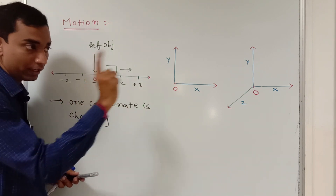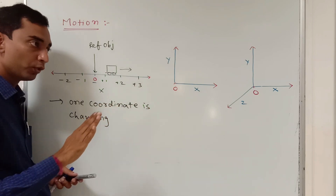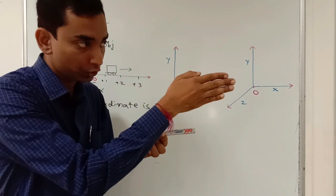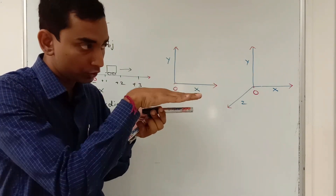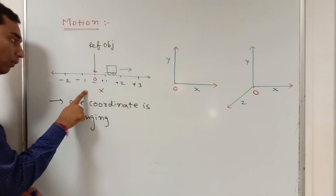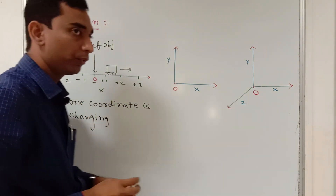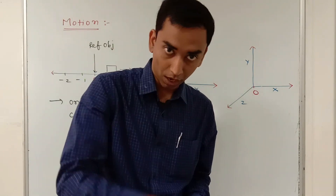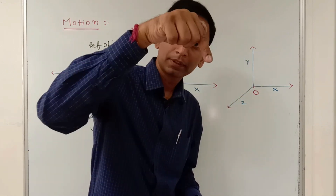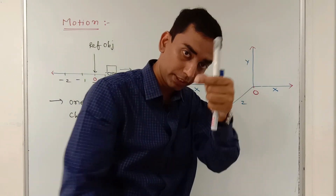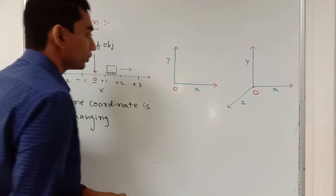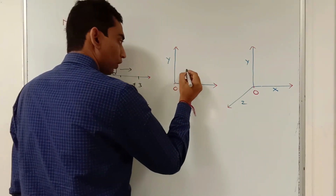Examples of one-dimension motion: a car moving in a straight road only in one direction — it should not be moving in an inclined plane. So a car moving along purely the east direction in a straight path, not up or down, is an example of motion in one dimension. Another example: if this pen is falling down, it is falling only along the y-axis, so only the y-coordinate is changing. These are examples of motion in one dimension.